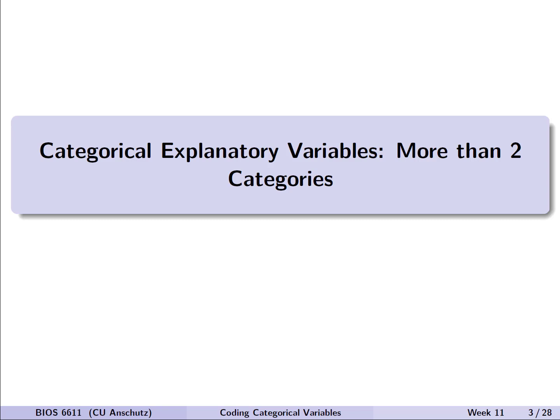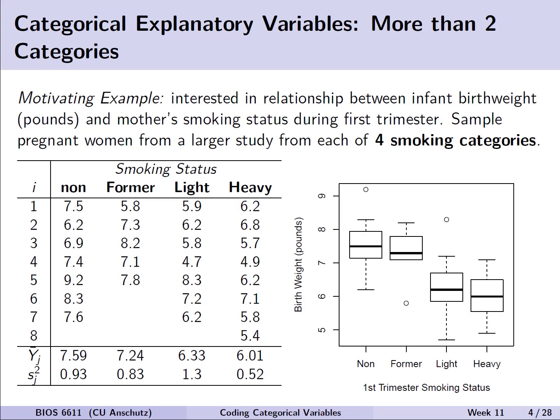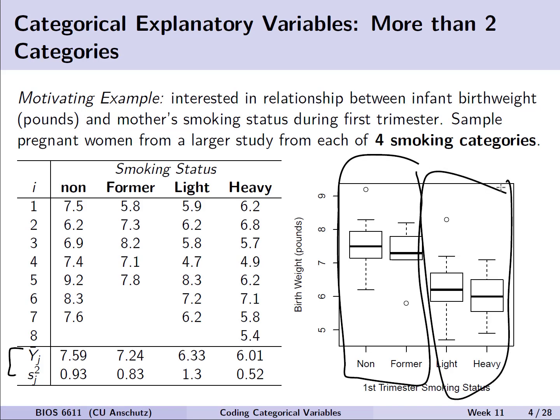Let's start with categorical explanatory variables and discuss what to do when there's more than two categories. For this lecture, let's consider the motivating example where we're interested in the relationship between infant birth weight in pounds and a mother's smoking status during her first trimester. We sampled pregnant women from a larger study from each of four smoking categories: non-smoker, former smoker, light smoker, and heavy smoker. We see those summaries with sample size, sample means, and variances in the table on screen. Visually, we can also look at box plots where non- and former smokers seem to have higher birth weight than light and heavy smokers.